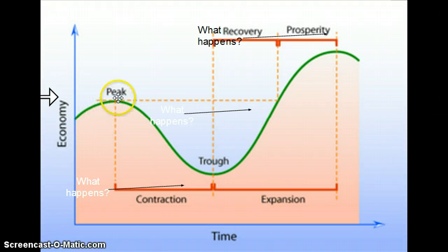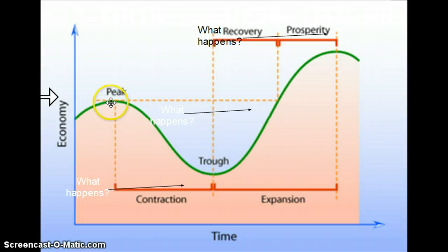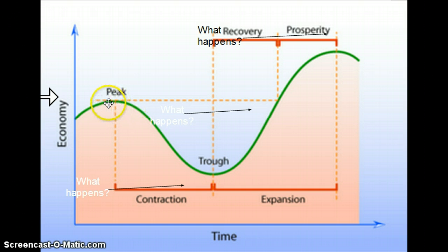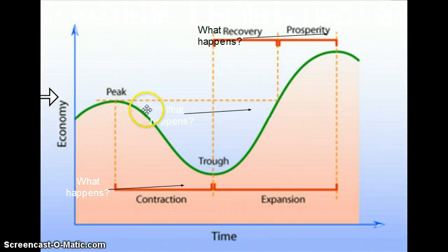We're going to start at this peak right here — the peak performance of the economy. What's happening here is we're seeing our employment numbers peak out, our GDP peak out, inflation has reached its max, and eventually the business cycle is going to take a downturn.